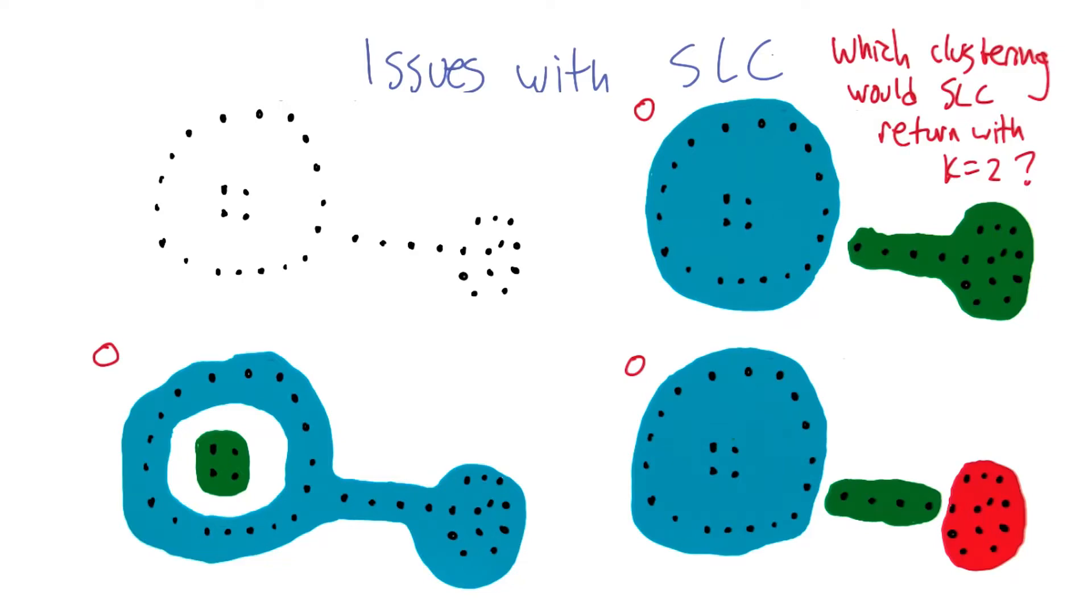All right, so how does this work, Charles? How do you do single link clustering? Again, assuming the distances are distances in the plane, just because it makes it easy.